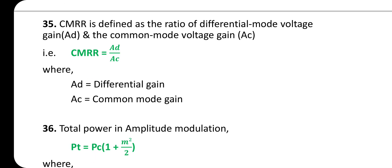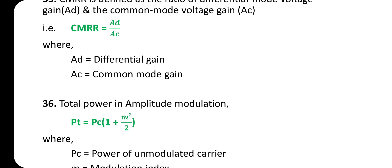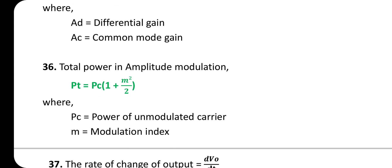CMRR is defined as the ratio of differential mode voltage gain A_d to common mode voltage gain A_c: CMRR = A_d / A_c, where A_d is the differential gain and A_c is the common mode gain.